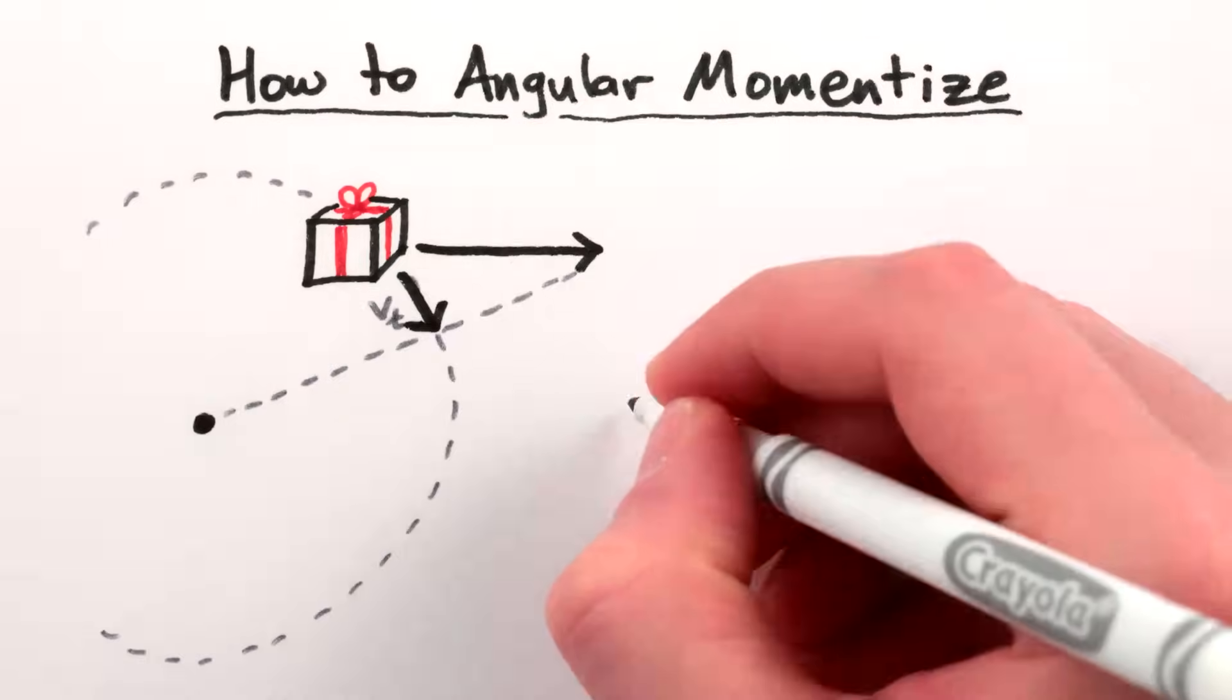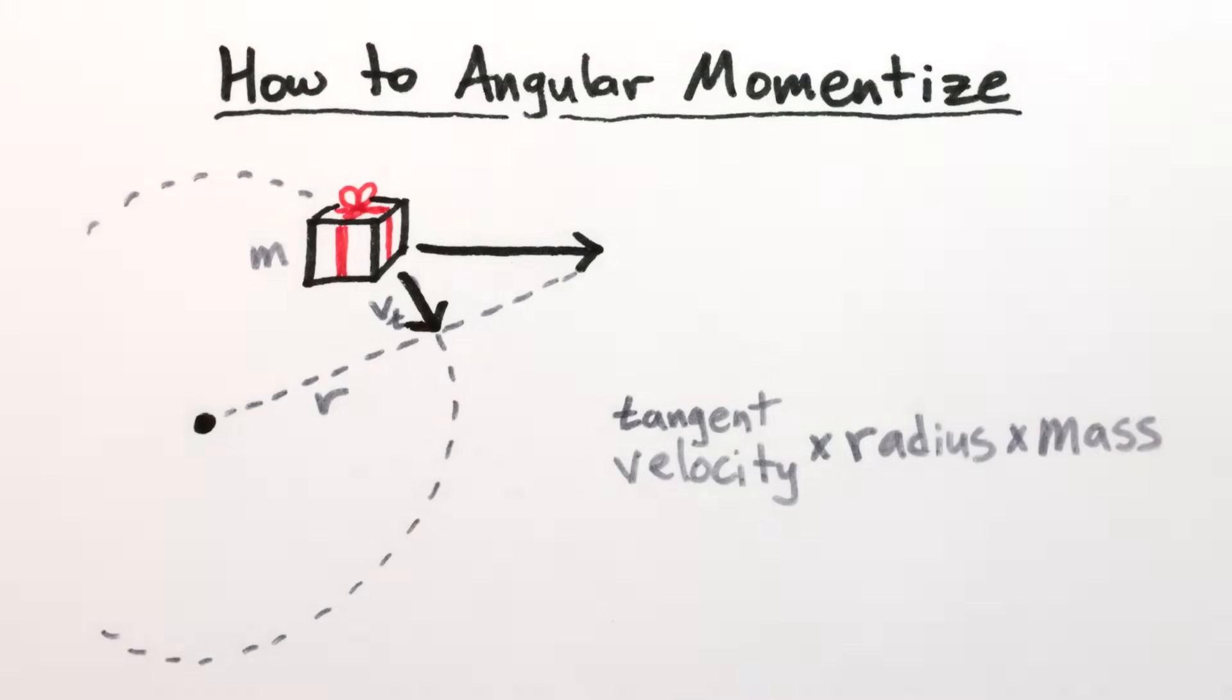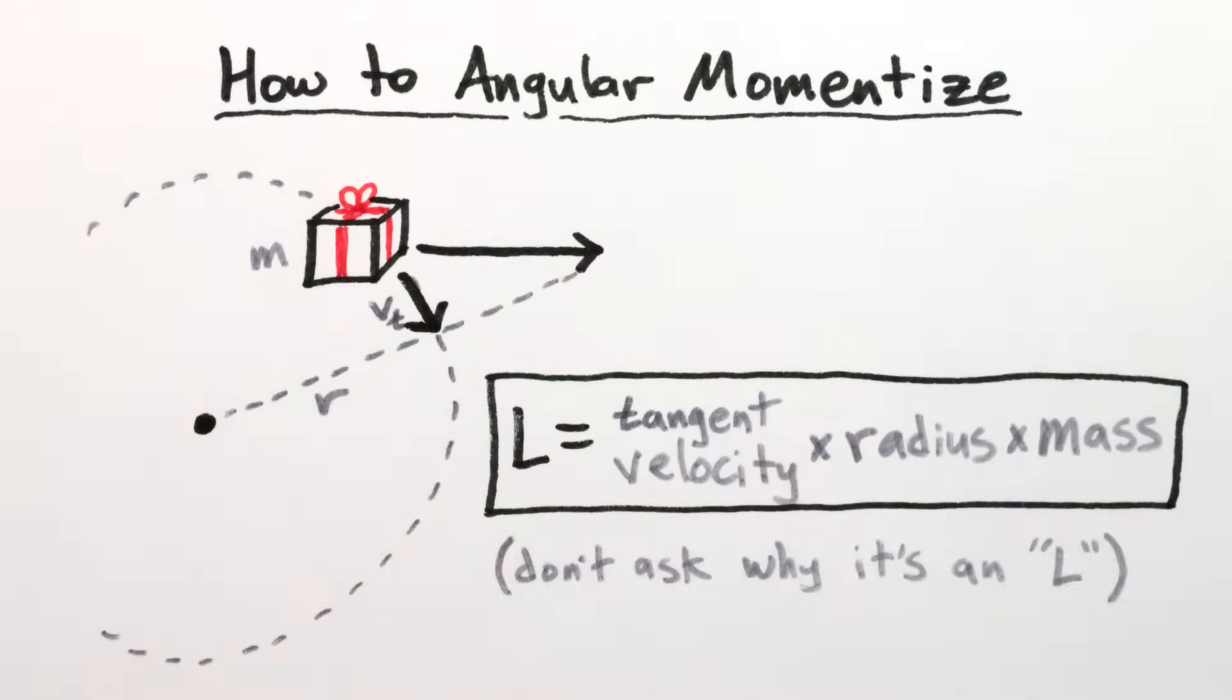But anyway, then multiply that speed times the size of the circle and the object's mass. And there you have it. Angular momentum.